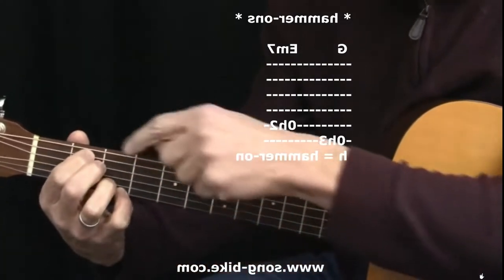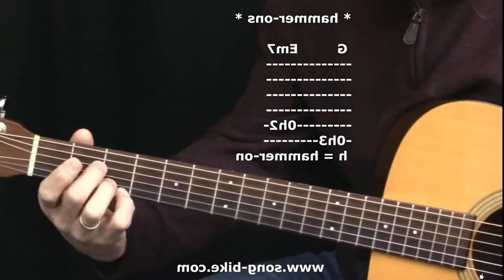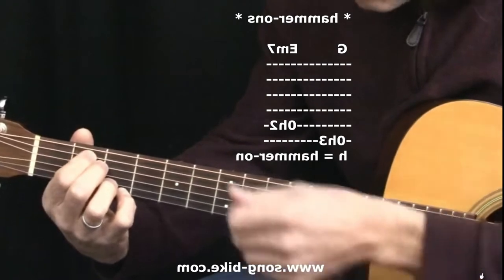Here's the E minor. I'm going to do something similar, but I'm going to do the hammering with my fifth string: my index in the air and then the fifth string second fret.